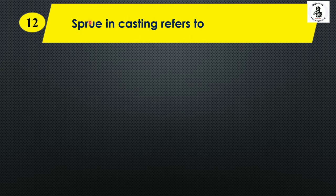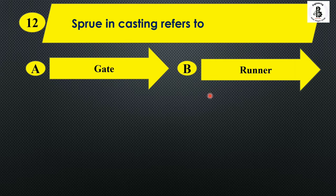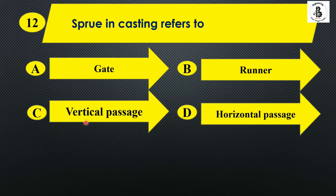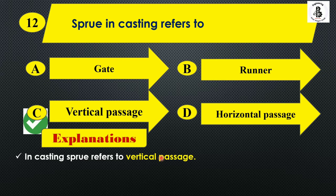Sprue in castings refers to: Option B: runner, Option C: vertical passage, and Option D: horizontal passage. The sprue is on the vertical position — it provides a vertical passage connected with the pouring basin and gating system to supply molten metal towards the casting cavity. So the right answer is Option C.